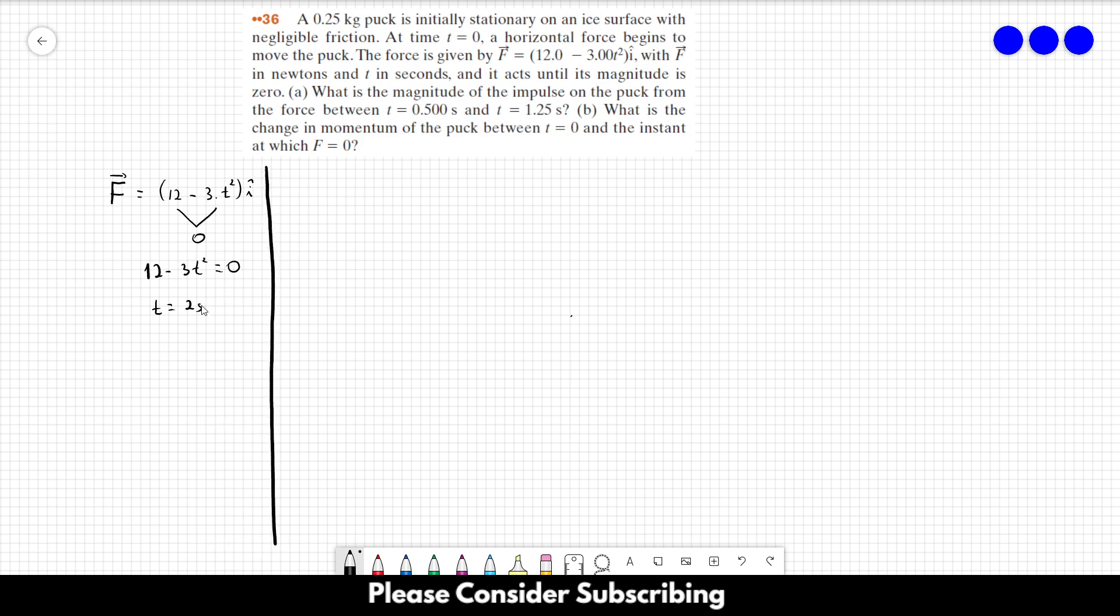Now we can solve it because 2 is greater than 1.25, so we don't need to take into account this fact for letter a. For letter a, we want the magnitude of the impulse.